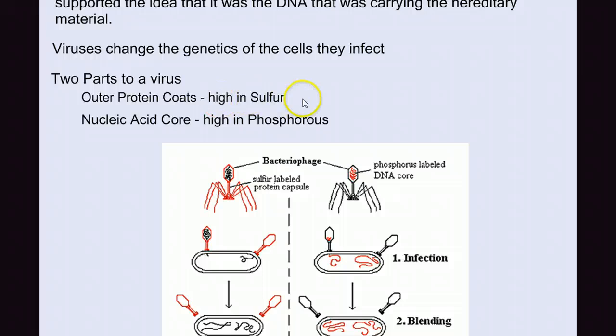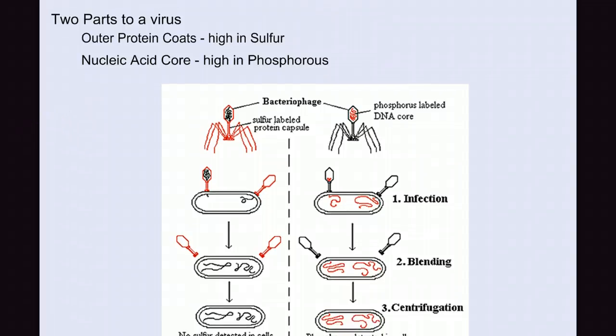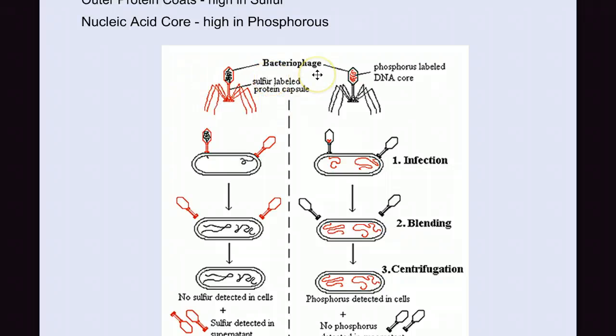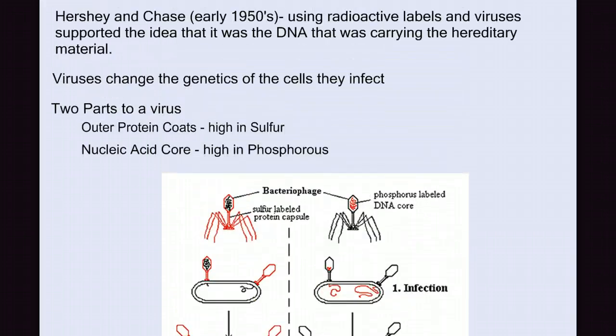The outer protein coat of viruses is high in sulfur, and so in one experiment, they used radioactively labeled sulfur to tag that outer protein coat. The nucleic acids of a virus are high in phosphorus, and so in the parallel experiment, they used radioactively labeled phosphorus to tag the DNA. And then they let these bacteriophages, these viruses that infect bacteria, infect different cells, and then they just looked for where the radioactive tag was. So when they used radioactively labeled sulfur, essentially just tagging the protein, they found no evidence of radioactivity inside the infected bacteria. And they did find the radioactive labels in the supernatant on the outside. When they radioactively labeled the phosphorus core, they found the radioactive tags inside the cell. And we know that viruses can change the genetics of a bacteria. And so this was further evidence that it was DNA and not protein that was the genetic material.